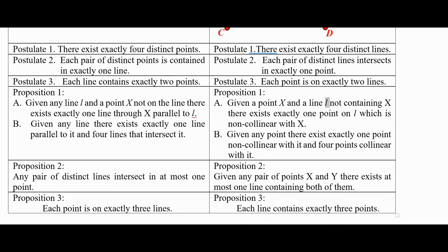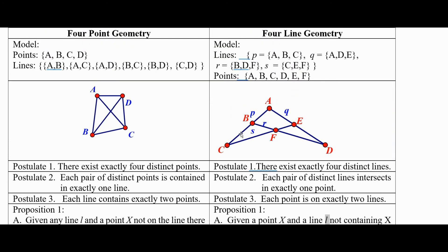Well, change lines to points over here. Given any pair of points, X and Y, there exists at most one line containing them. Either there's exactly one line containing them, like A and B, or none at all, like A and F.